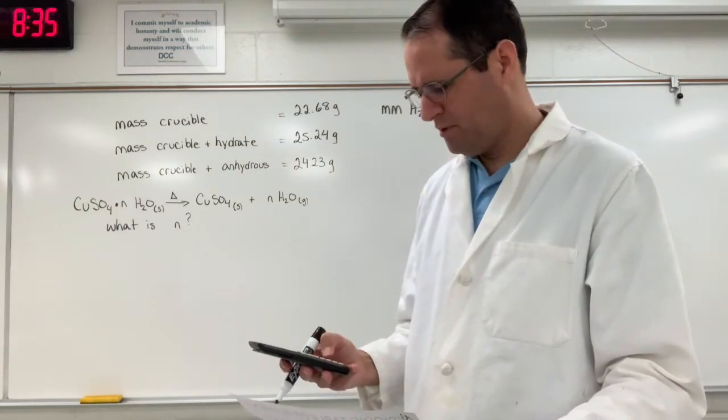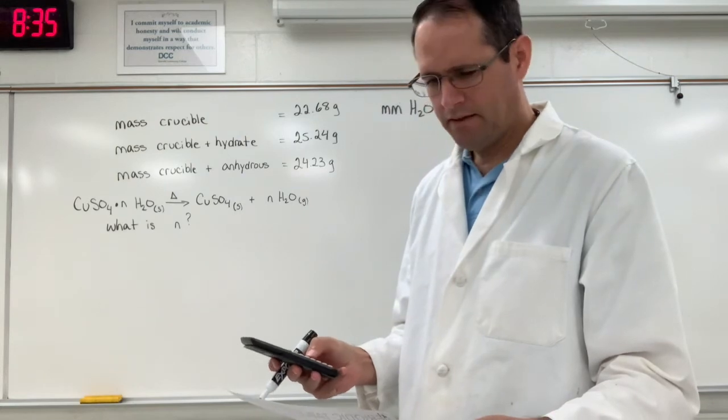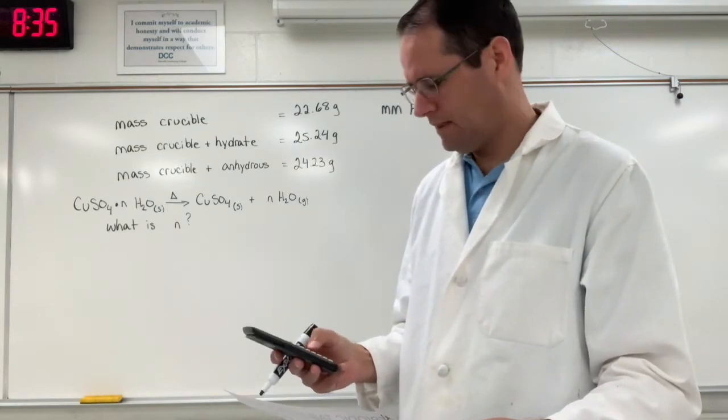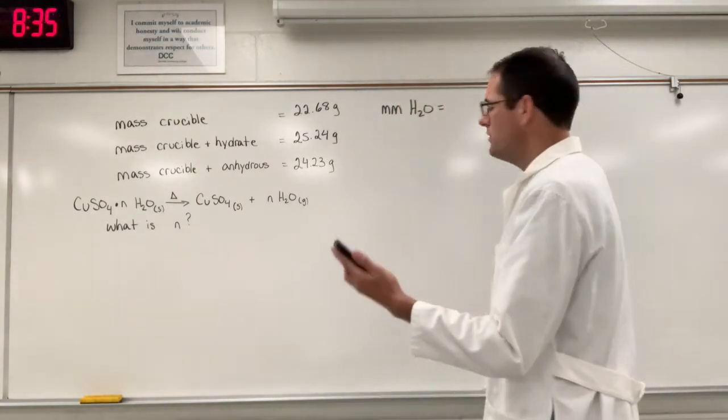On the very bottom of ptable.com you'll see a link, PDF. Click that and you'll be able to select a periodic table that you can print. So 18.015.